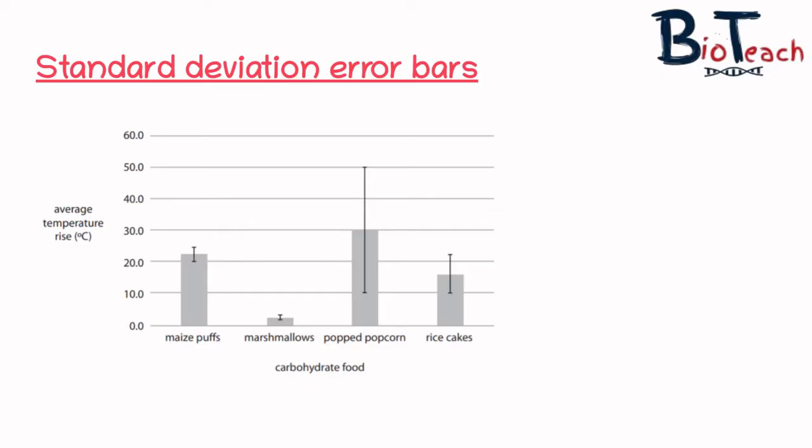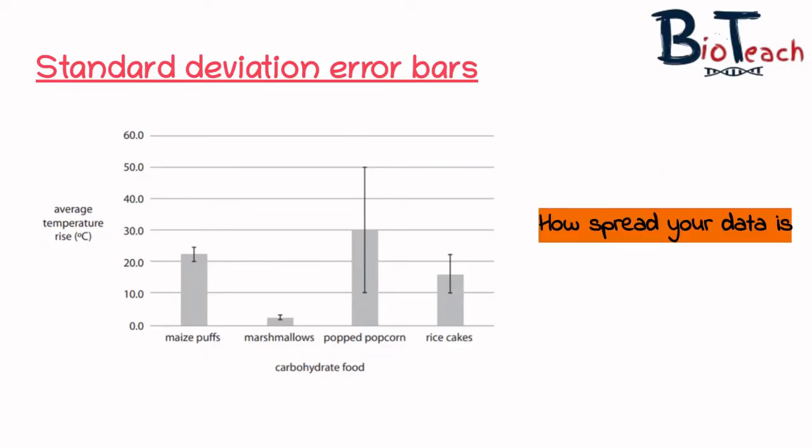Error bars are really good at communicating information about your data. They can show you how spread the data are around the mean value. If you've got a small error bar, it basically means you've got a smaller standard deviation and that means a low spread — in basic terms, the data is clumped around the mean.